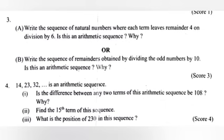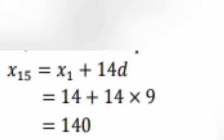Part 2: Find the 15th term of this sequence. Answer: x₁₅ = x₁ + 14d = 14 + 14 × 9 = 140.